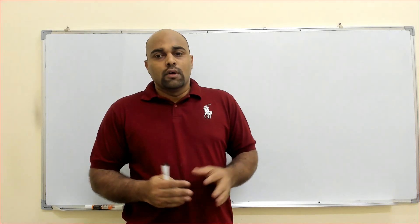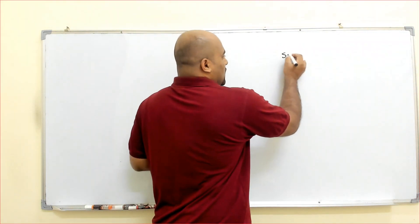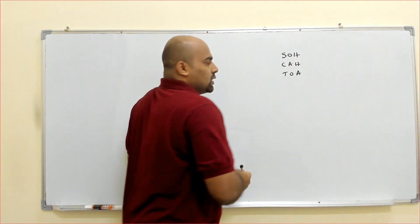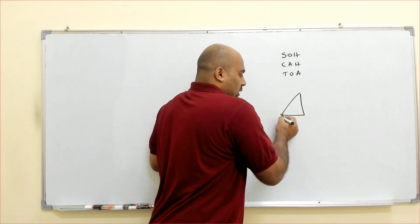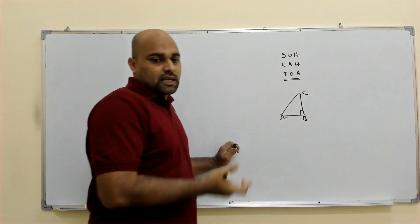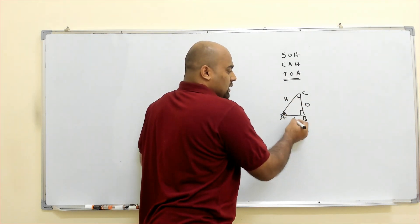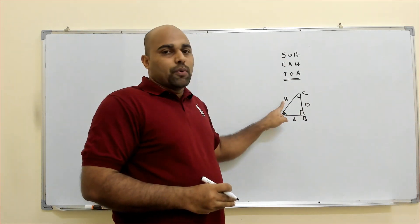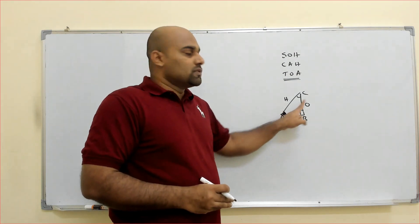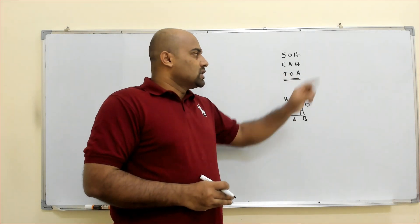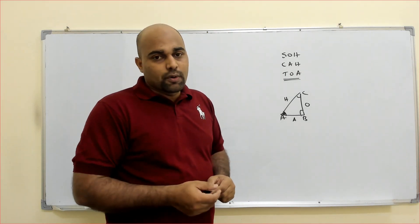In grade 10 there are a lot of results — you might know what is sin, cos, tan, cosec, sec, cot. To remember sin, cos, tan, we have a code SOH CAH TOA. I used to call it 'soccato.' Sin means opposite by hypotenuse. We are taking a right angle triangle ABC. For an acute angle, this is the opposite side, this is the hypotenuse side, and this is the adjacent side. Sin is opposite by hypotenuse, cos is adjacent by hypotenuse, tan is opposite by adjacent.